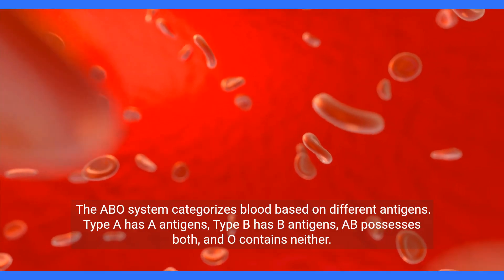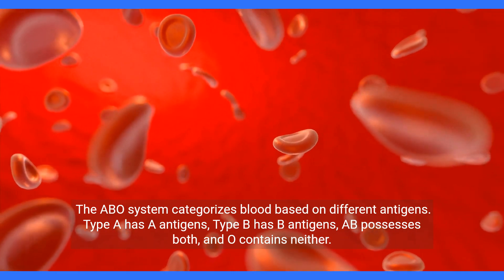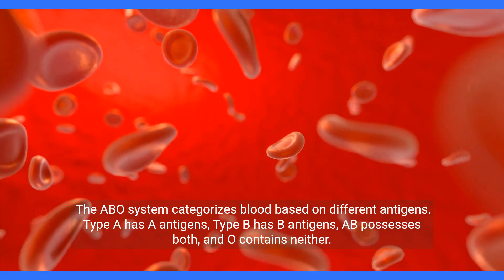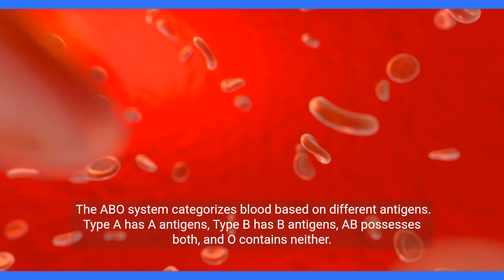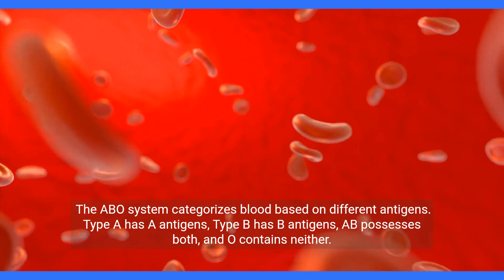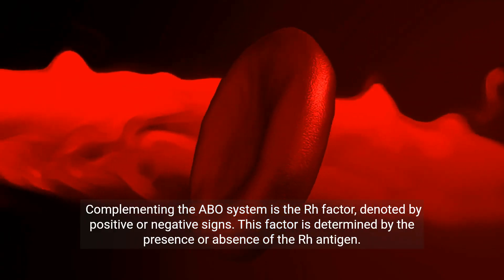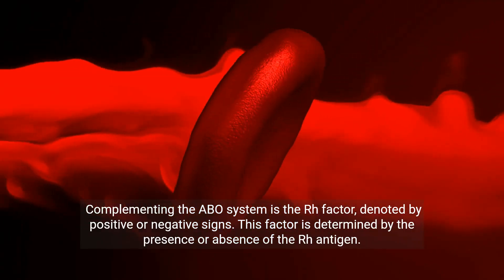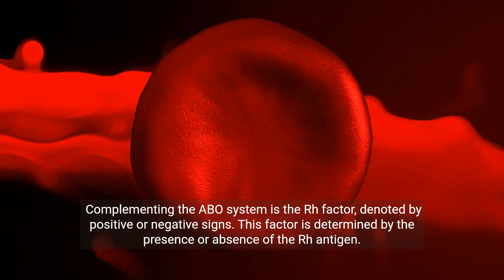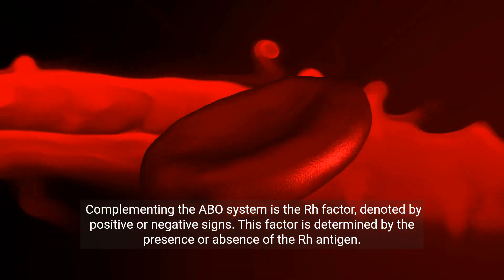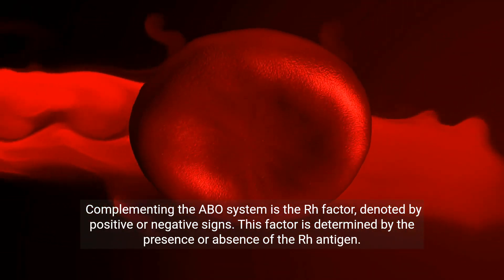The ABO system categorizes blood based on different antigens. Type A has A antigens, type B has B antigens, AB possesses both, and O contains neither. Complementing the ABO system is the RH factor, denoted by positive or negative signs. This factor is determined by the presence or absence of the RH antigen.